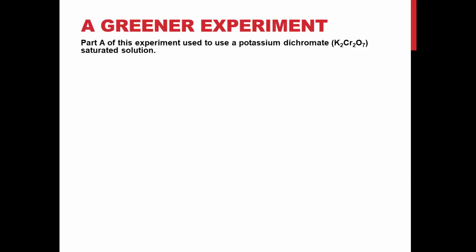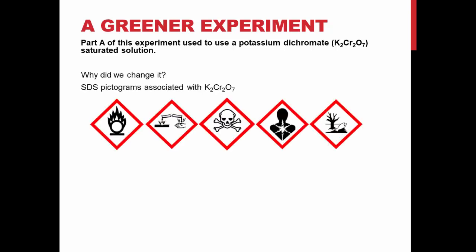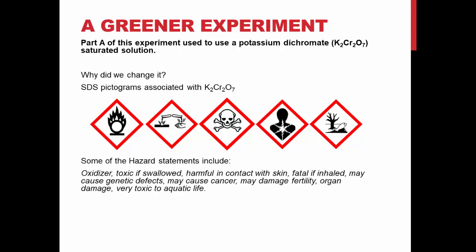Part A of this experiment used to use a saturated solution of potassium dichromate. It was changed for several reasons. Here are some of the pictograms associated with potassium dichromate. Some of the hazard statements include: oxidizer, toxic if swallowed, harmful in contact with skin, fatal if inhaled, may cause genetic defects, may cause cancer, may damage fertility, organ damage, and is very toxic to aquatic life. The safety comparison becomes clear when getting the SDS pictograms of sodium chloride — because there aren't any.